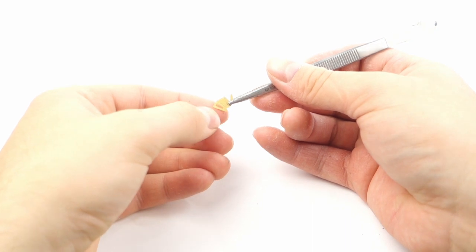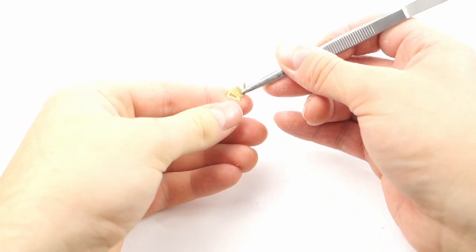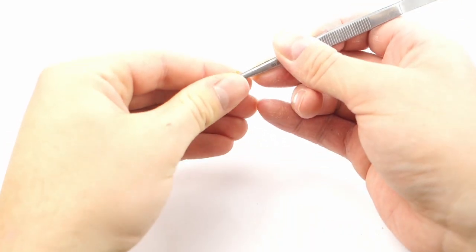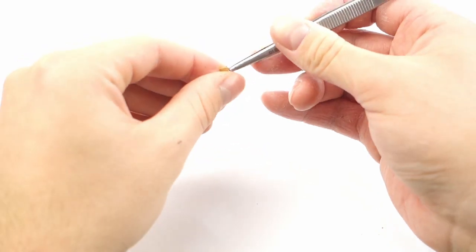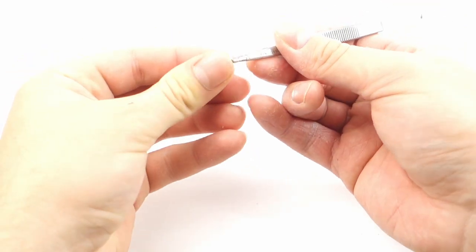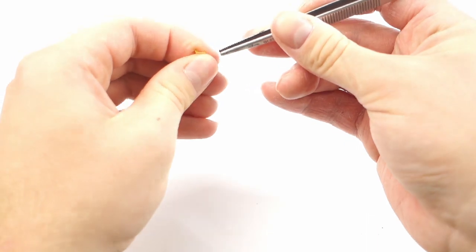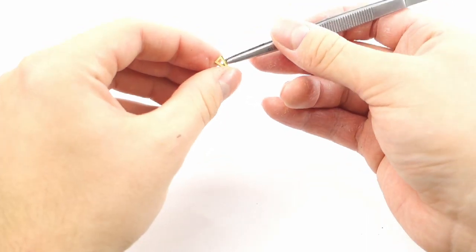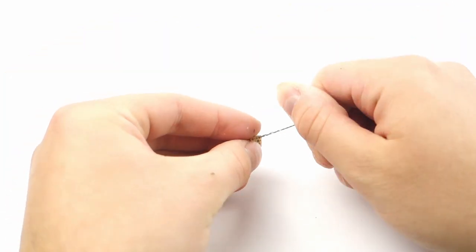Those smoke grenade launcher mounts might seem a little complicated to correctly bend, but if you have good tweezers, you can bend them into shape with no problems. They are a great improvement compared to the solid pieces included in the kit. I also drilled out the holes for grenades because they were too shallow in the kit.